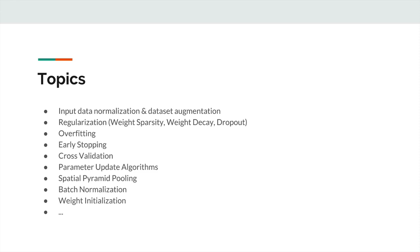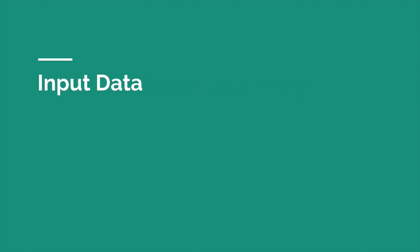We'll talk about weight initialization, batch normalization, and this really neat thing published a couple of years ago called spatial pyramid pooling, which solves one of the big issues with convolutional networks - that all inputs have to be the same size. There will also be little snippets of Keras code throughout so you can copy and use them. Those are the topics we're going to be discussing.